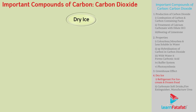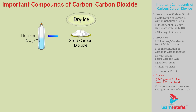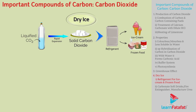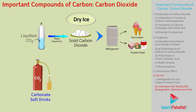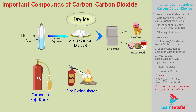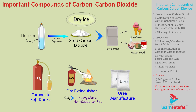Dry ice: Solid carbon dioxide is called dry ice. It can be obtained by allowing liquefied carbon dioxide to expand rapidly. It is used as a refrigerant for ice cream and frozen food. Gaseous carbon dioxide is used to carbonate soft drinks. It is used as a fire extinguisher because of its heavy mass and non-support of combustion. It is also used to manufacture urea.